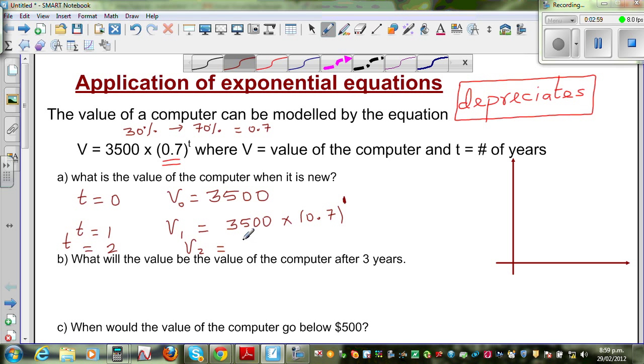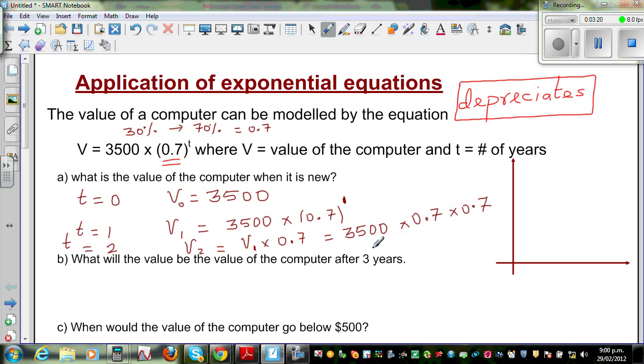The value after 2 years would be v1, that's the value after 1 year, times 70% of that year. So, this is 3500, times 0.7, times 0.7. So, this is 3500, times 0.7 squared. And that's how the value comes here, to the power 2.